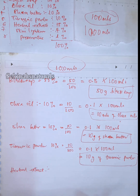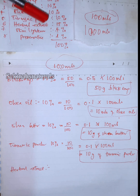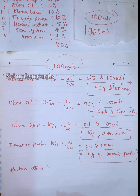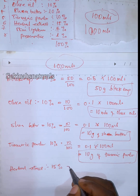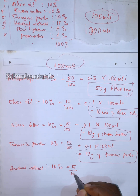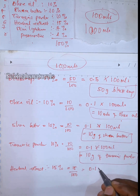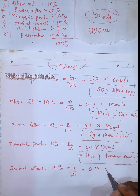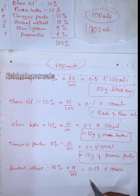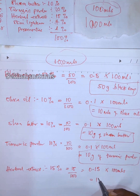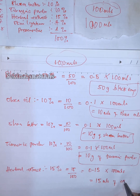For the herbal extract, the recipe calls for 15%. So that is 15 over 100, which gives us 0.15, times the total amount of black soap to be made — 100 mils — and this gives us 15 mils of herbal extract.